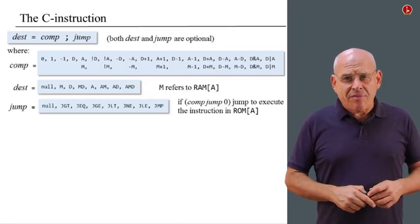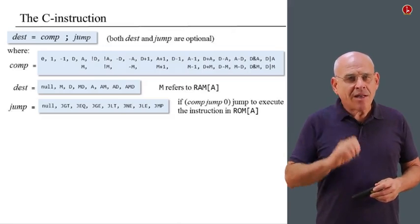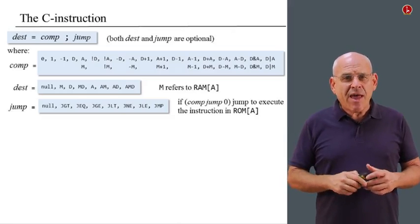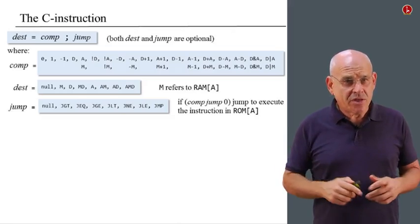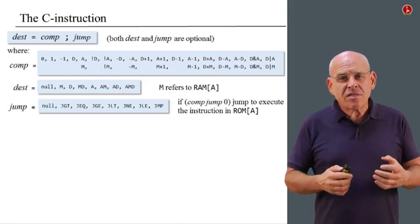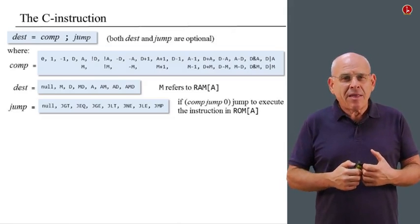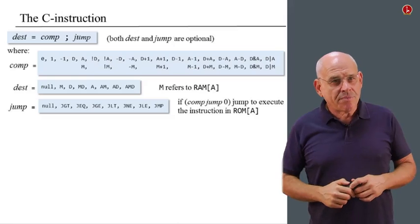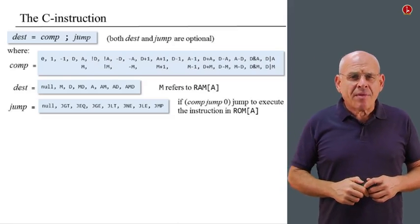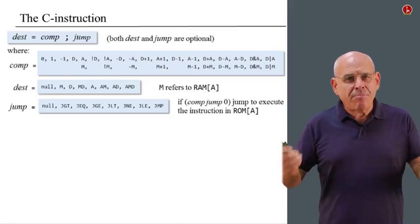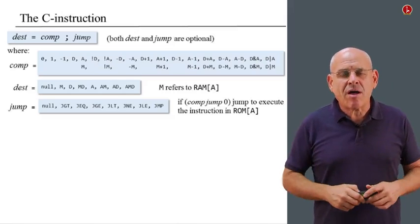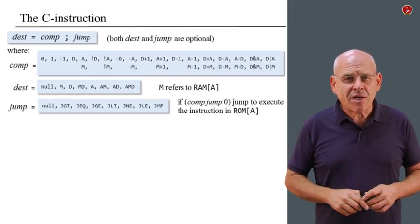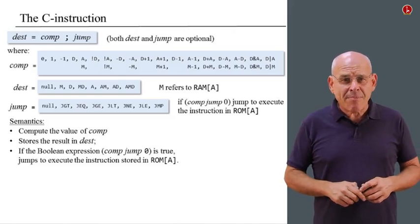Now, what about the jump directive? The jump directive takes a little while to get used to, and here is how it works. We have eight possible conditions, and these conditions always apply. They always compare the result of the computation to zero. And once again, instead of belaboring about it, I'm going to give some examples in just a few minutes, so this will become much clearer once we see the examples.